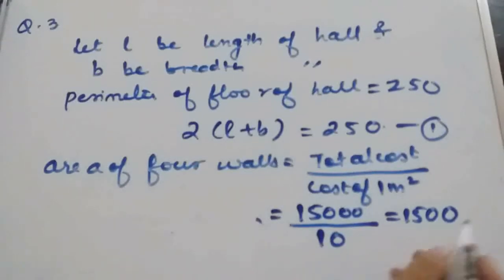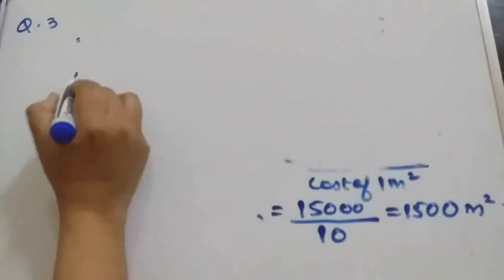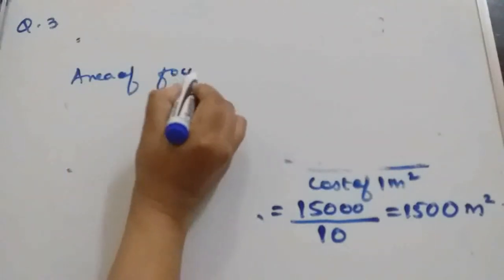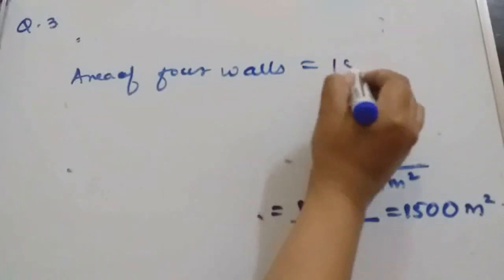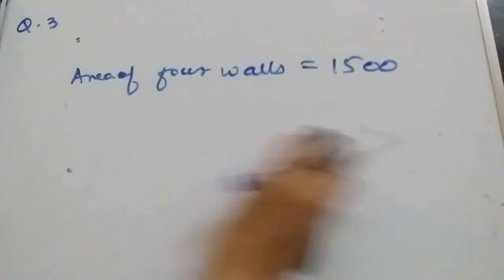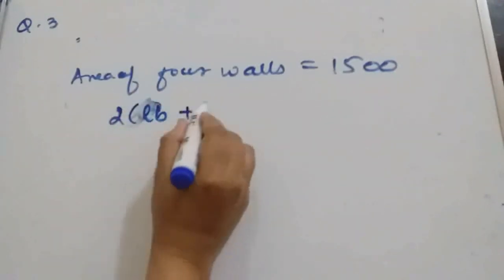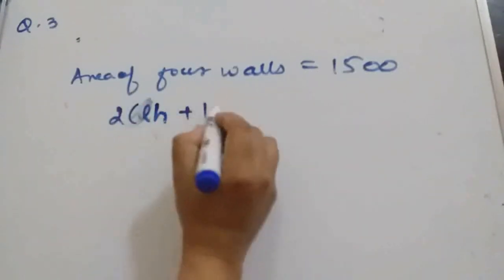Now after getting area of the 4 wall, we will write in L, B and H form. So what will be the total area of the total 4 walls? Area of 4 walls we got as this one, 1,500. But we know it is given by the formula 2 L H plus B H.